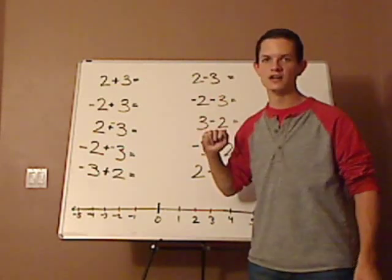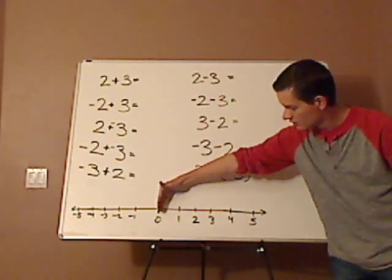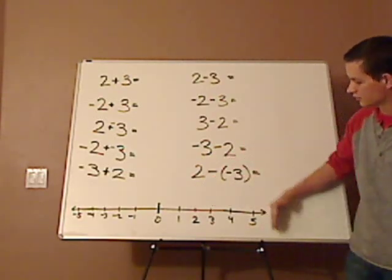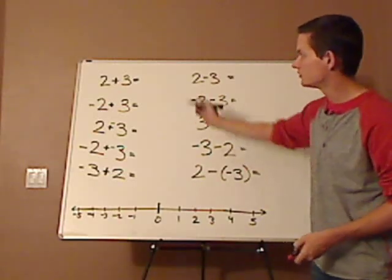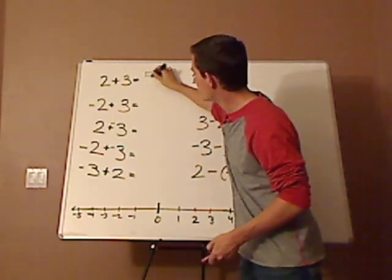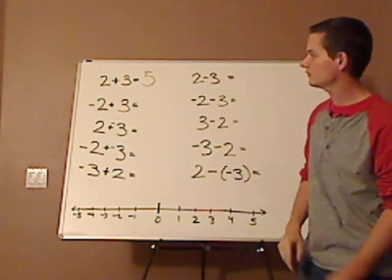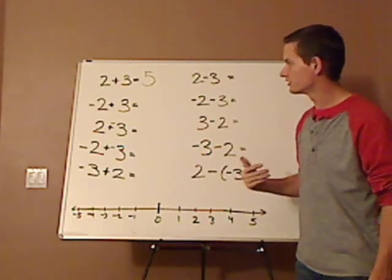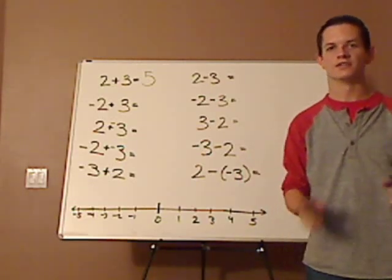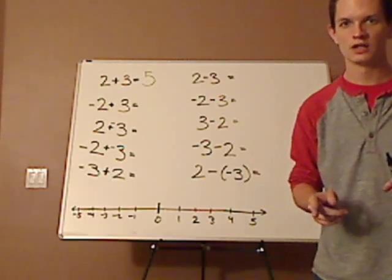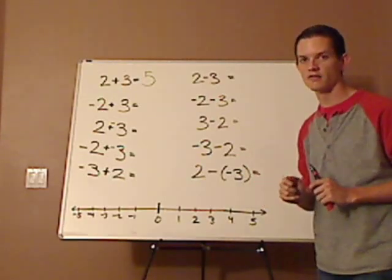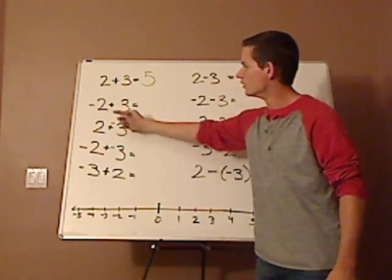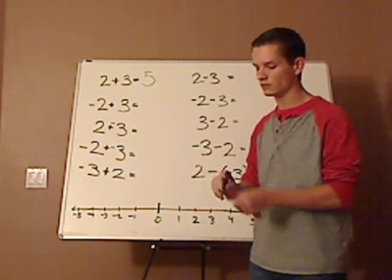So here, what you want to do is follow the rules. Now, addition is very easy with the rules. If I have 2 plus 3, those are going the same direction. 2, and then I add 3, so 1, 2, 3, so I'm at 5. So 2 plus 3 equals 5. Now, next, I have a negative 2 plus 3. Now, the rule states if the signs are different, you take the difference of the two, and whichever one's further away from 0, you keep that sign.